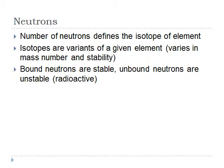So what do neutrons do then? Well, the number of neutrons defines the isotope of the element. Isotopes are variants of a given element, which means that it would vary in terms of the mass number and stability. Bound neutrons are stable, whereas unbound neutrons are unstable or radioactive.